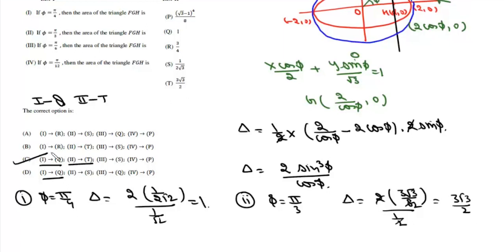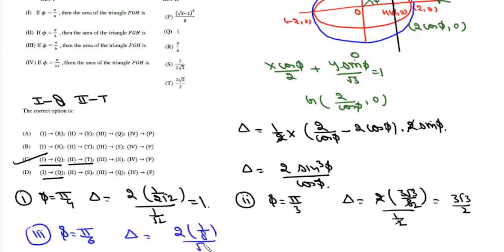For the third case, φ = π/6. The area Δ = 2 × (1/2)³ / (√3/2) = 2 × (1/8) / (√3/2) = 1/(2√3). So this third case matches S.